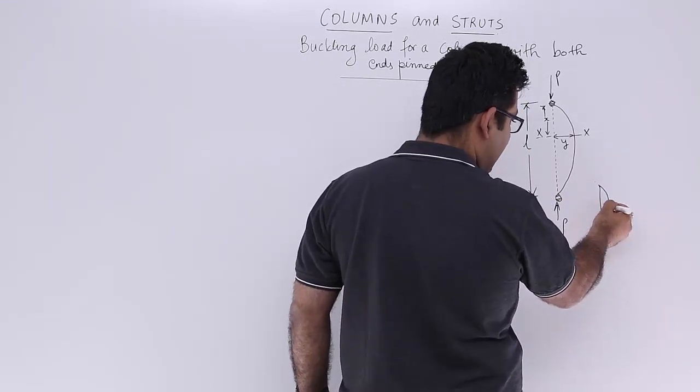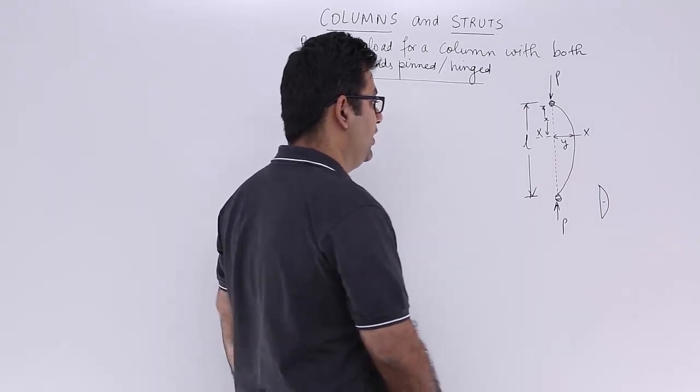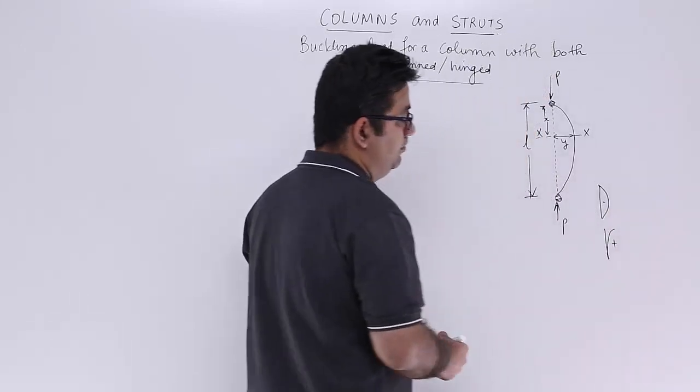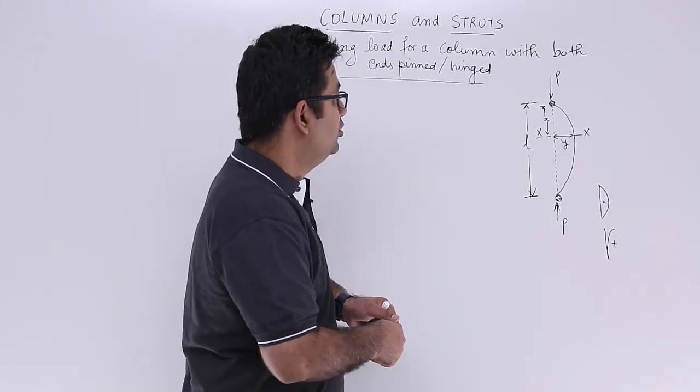If your column bends like this, this is taken to be a negative bending. If your column bends like this, then this is taken to be a positive bending. So make a note of that convention. This is clearly a negative bending.